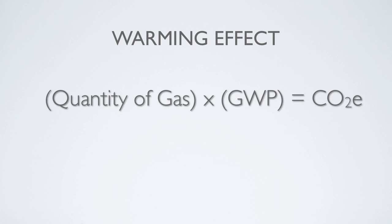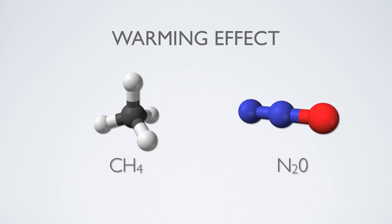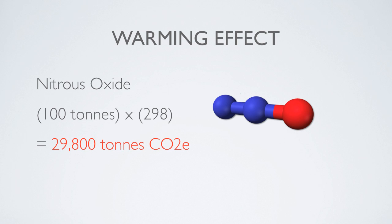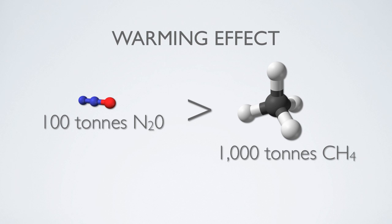To calculate the warming effect of a specific batch of gas, we simply multiply the gas's GWP by the quantity of gas present. For example, let's compare the warming effect of 1,000 tons of methane and 100 tons of nitrous oxide. Methane has a global warming potential of 25, so 1,000 tons times 25 equals 25,000 tons of CO2 equivalent. Nitrous oxide has a global warming potential of 298, so 100 tons times 298 equals 29,800 tons of CO2 equivalent. As you can see, this means that emitting 100 tons of nitrous oxide has a greater effect than emitting 1,000 tons of methane. This comparison is made possible by the use of CO2 equivalents as a standard unit of reference.